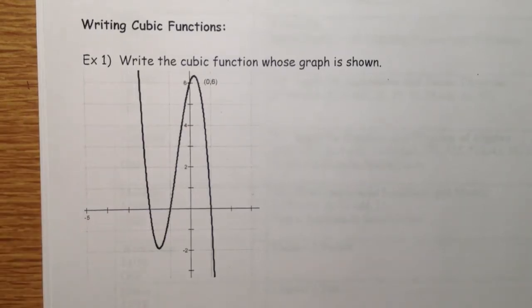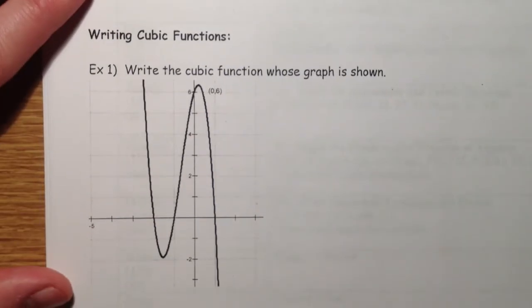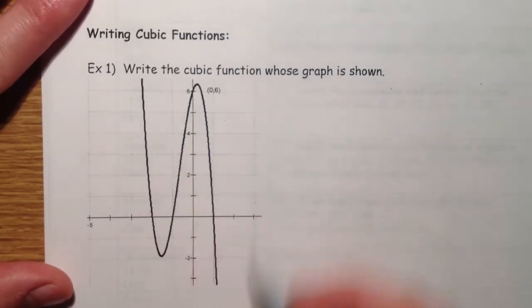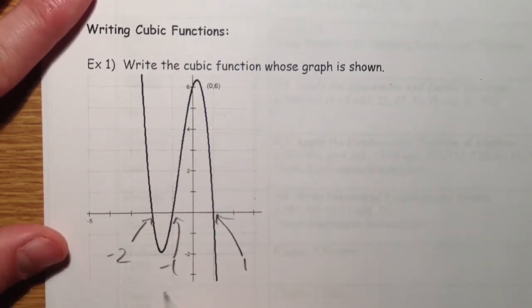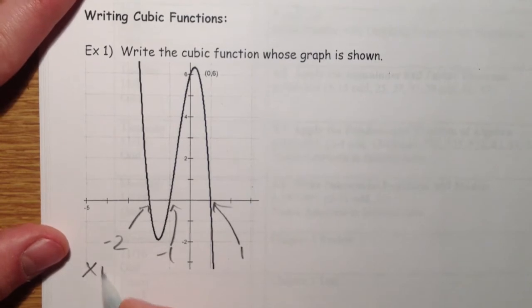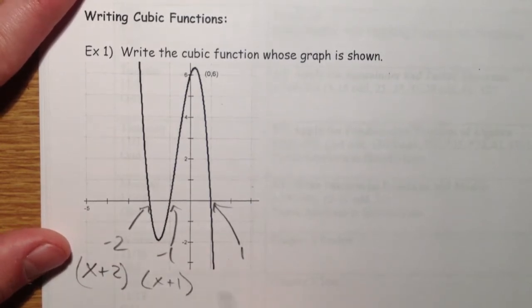Alright, so what we're talking about is writing cubic functions. If we have a graph, we know that it crosses at negative 2 and negative 1 and at 1. So if all of these are zeros, if negative 2 is a zero, I know x plus 2 is a factor. I know x plus 1 is a factor and x minus 1 is a factor.